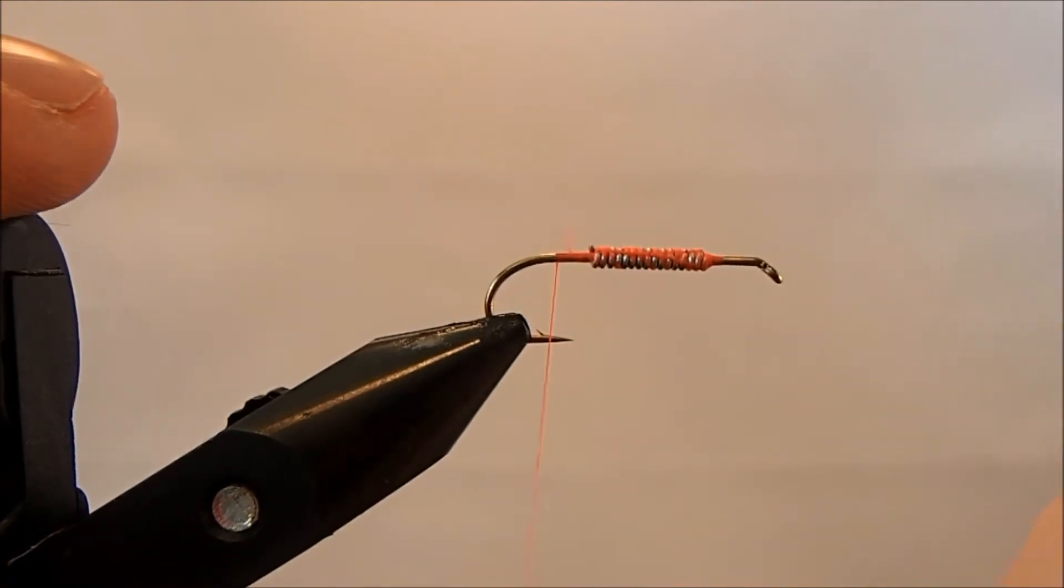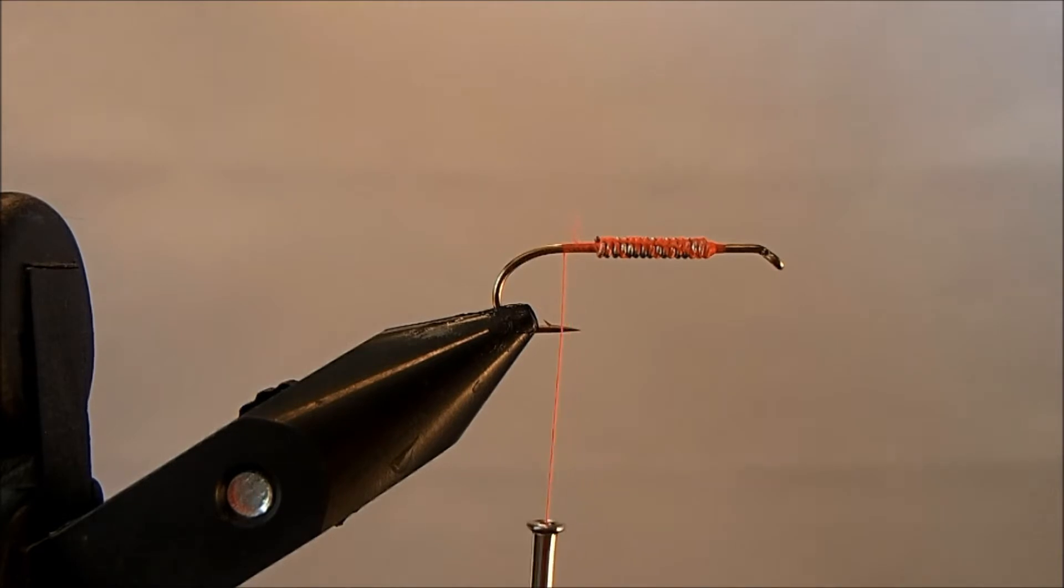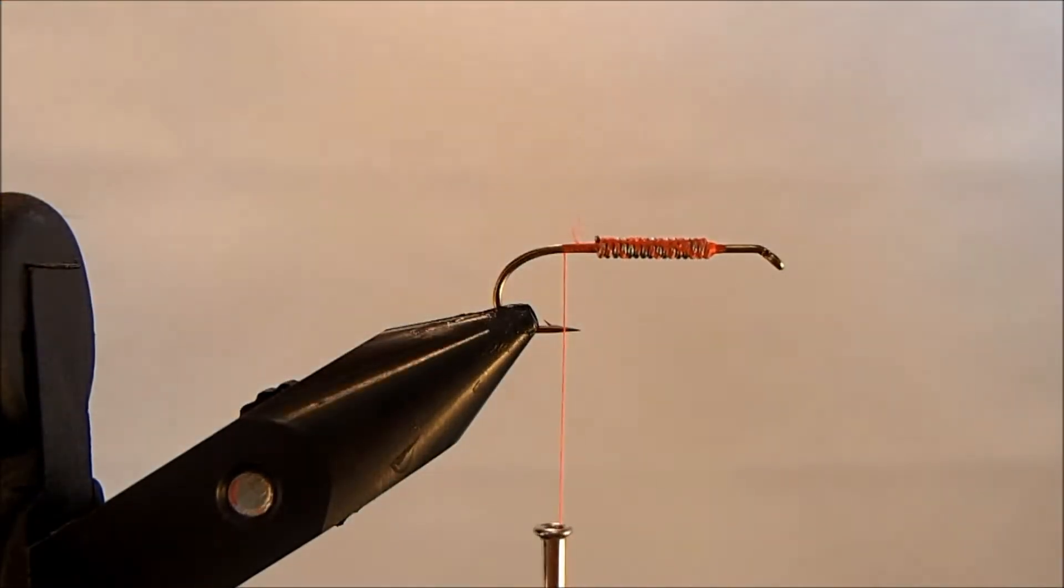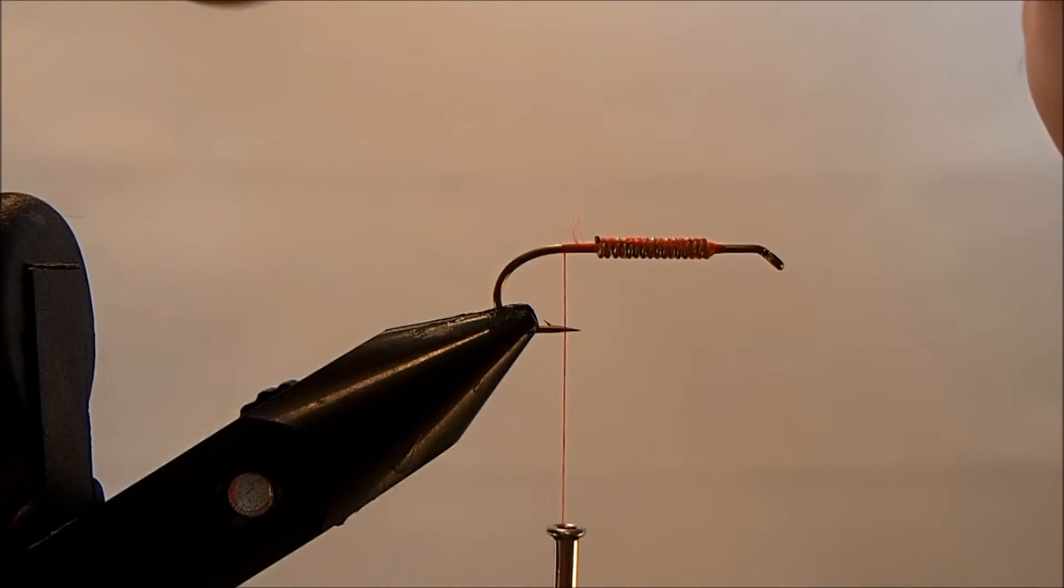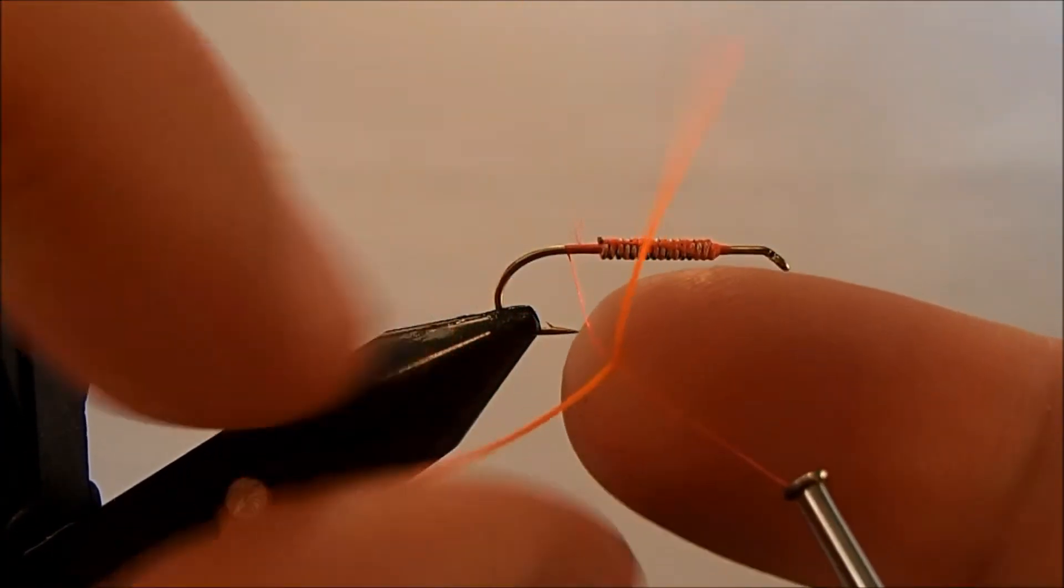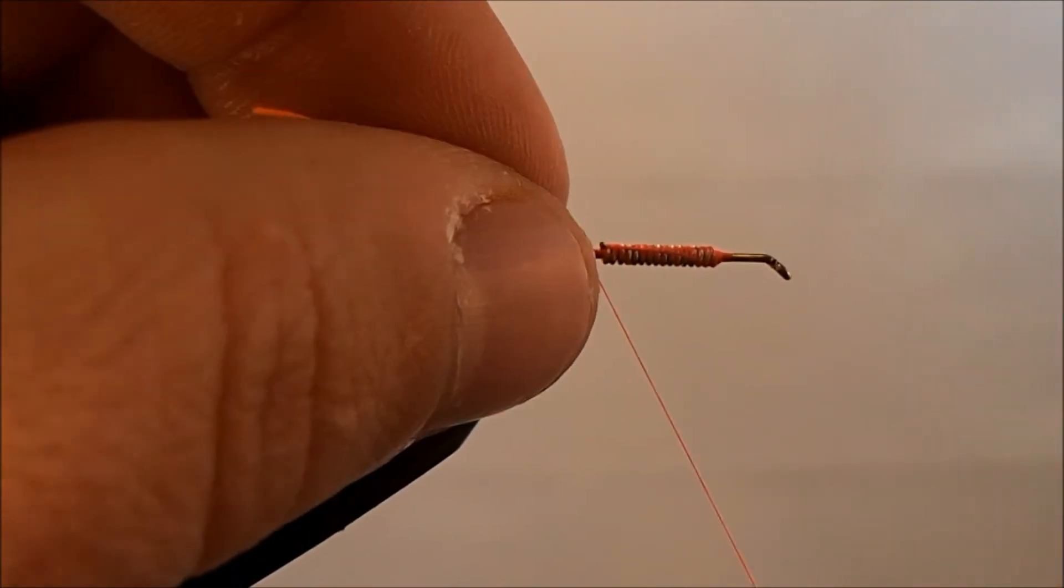Now I'm going to bring it down to just short of the barb of the hook and I'm going to take a strand of my rubber leg material. I'm going to use a very fine orange rubber leg. My philosophy on legs for this sort of stuff is the thinner you can go the better. I just feel like it has more movement when it's thin.